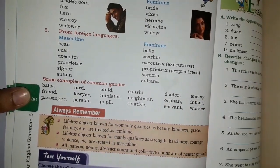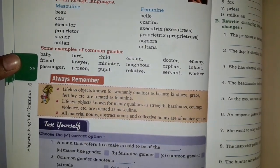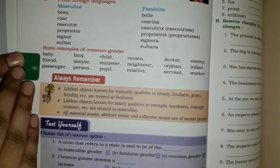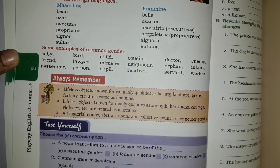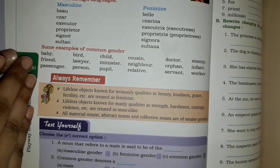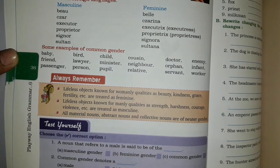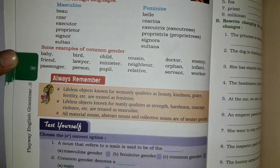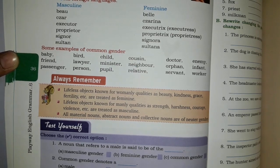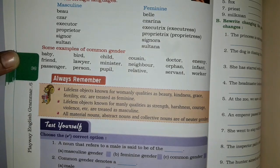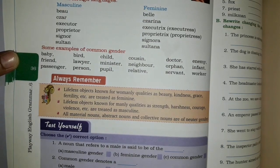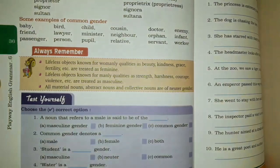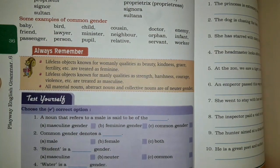Now let's look at some examples of common gender. These are a list of words where we are confused whether the person being talked about is male or female. For example, 'baby' — we do not know if the baby is a boy or a girl. 'Bird' — we do not know if the bird is male or female. 'Child' — male or female? These are common gender words where we often get confused.